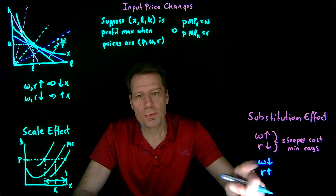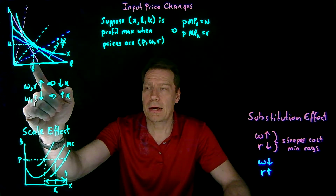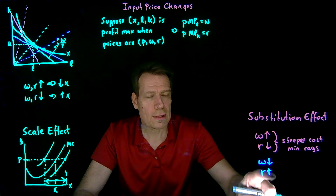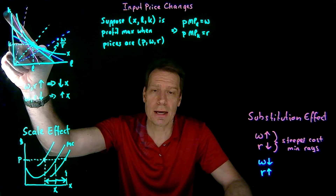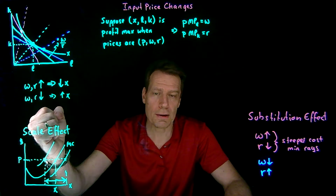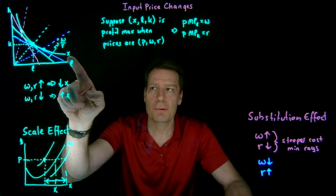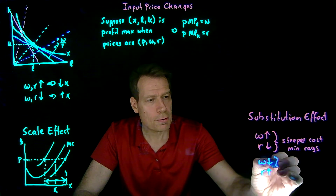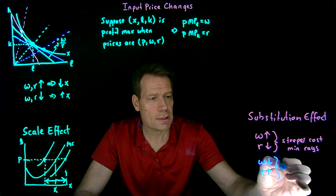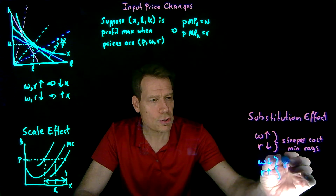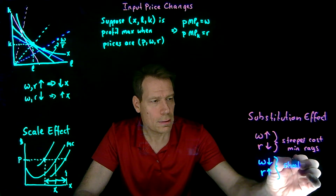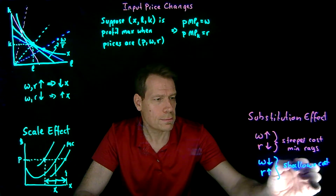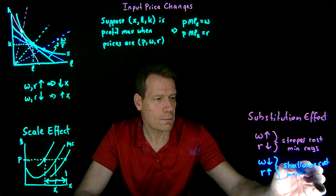And this should make intuitive sense. If the wage falls, labor has become cheaper, so we're going to substitute towards labor and away from capital. If the rental rate increases, capital has become more expensive, so we're going to substitute away from capital and therefore towards labor, if we continue to try to produce the same quantity as before. So a decrease in the wage or an increase in the rental rate will cause us to end up on a shallower cost-minimizing ray from the origin.